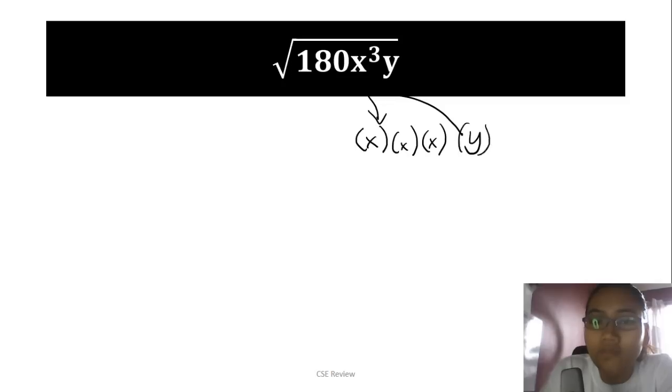The thing to understand is that when it comes to exponents, x³ is equivalent to x times x times x. What do we do with numbers in radicals? We factor them, right? So you have three x's, one y, and then we factor 180. You have 2 and 90, 2 and 45, 9 and 5, and the 9 becomes 3 and 3. Those are the factors of 180.